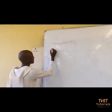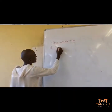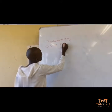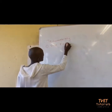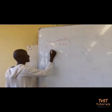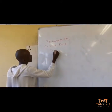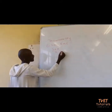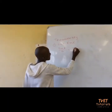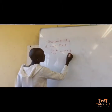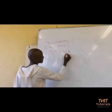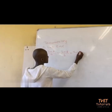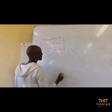The first rule is the sine rule. The sine rule has the formula: sine of A all over small a, equals to sine of B all over small b, equals to sine of C all over small c.